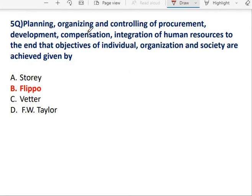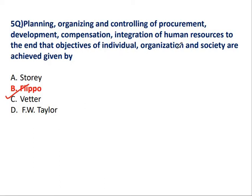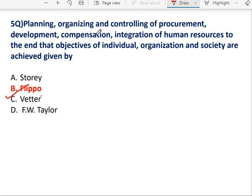Question 5: Planning, Organizing, Controlling of Procurement, Development, Compensation, Integration of Human Resource to achieve the objective of individual, organization, and society — this is the definition of HRM given by Filippo. Filippo defined Human Resource Management as the Process of Planning, Organizing, Controlling of Procurement, Development, Compensation, Integration of Human Resource in order to achieve the objective of individual, organization, and society. This definition is very important and will appear in competitive exams.